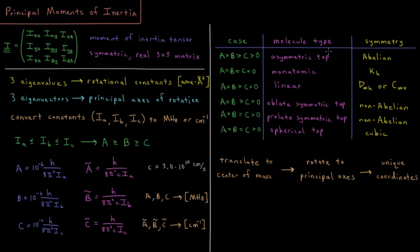If you've studied symmetry and group theory, an asymmetric top would be a molecule whose symmetry is described as abelian. If all three are equal and all three are zero, that would be a monatomic case — a single atom — with point group Kh. The case where A equals B, both greater than C, and C is zero, is what you get in linear molecules: you can't rotate around the molecular axis, so one rotational constant is zero. Those would be point groups D∞h or C∞v.